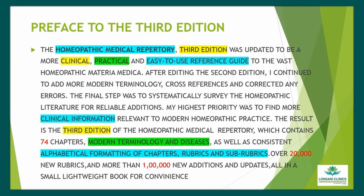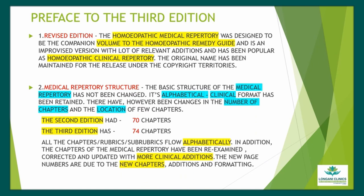Murphy says: after editing the second edition, I continued to add more modern terminology, cross-references, and corrected any errors. The final step was to systematically survey the homeopathic literature for reliable additions. My highest priority was to find more clinical information relevant to modern homeopathic practice. The result is the third edition, which contains 74 chapters, modern terminology and diseases, as well as consistent alphabetical formatting of chapters, rubrics, and sub-rubrics — over 20,000 new rubrics and more than 1 lakh new additions and updates, all in a small, lightweight book for convenience.